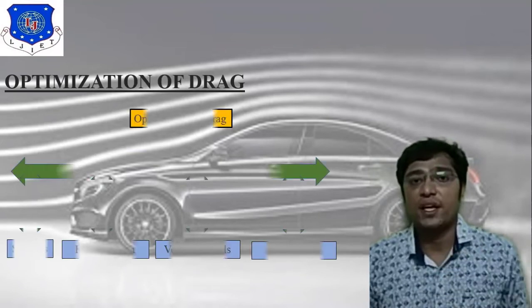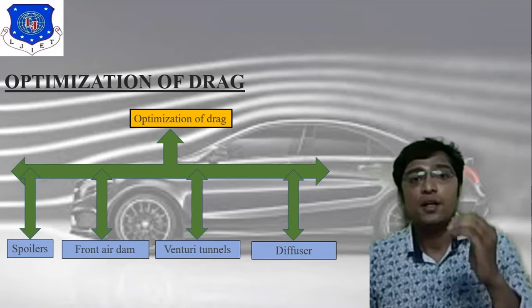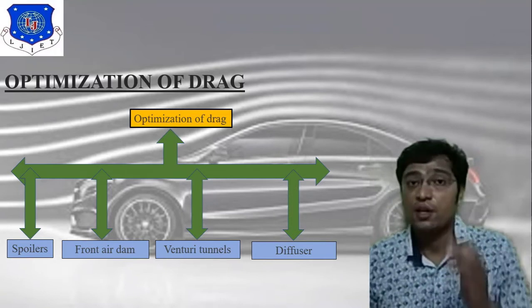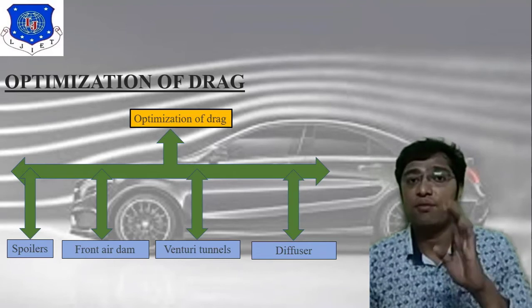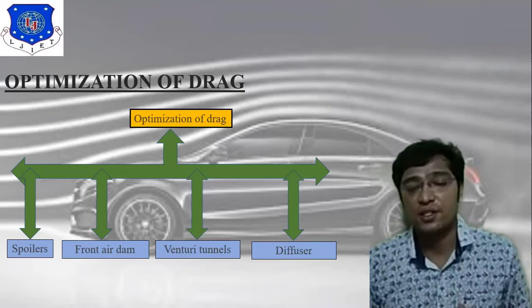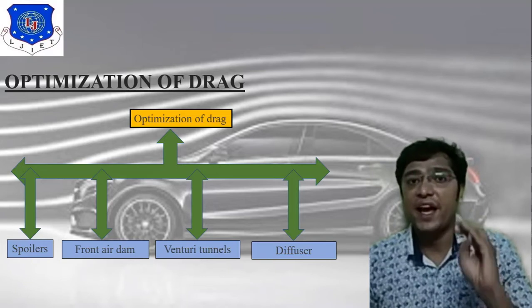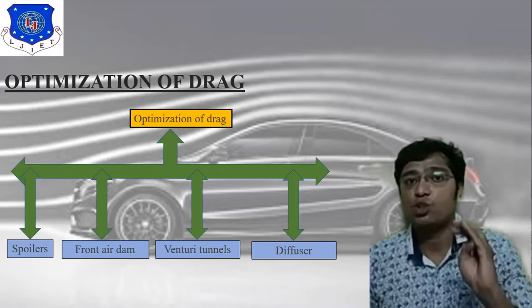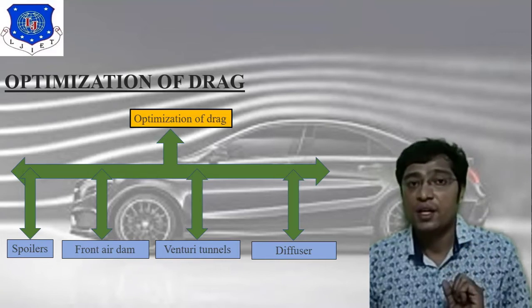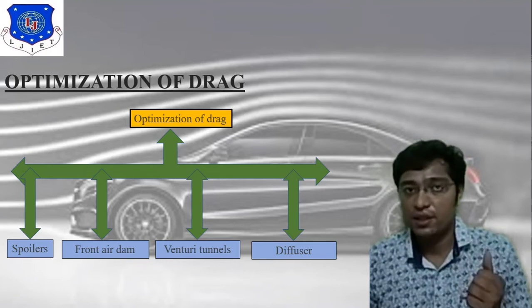There are four different devices to reduce air resistance. First is the spoiler, second is the front air dam, third is the venturi tunnel, and fourth is the diffuser. These are the four main devices to reduce air resistance.